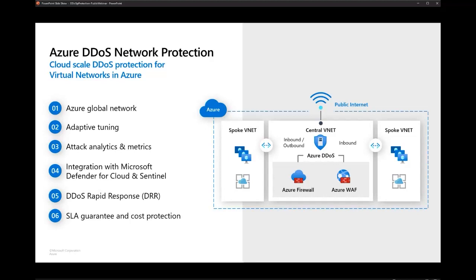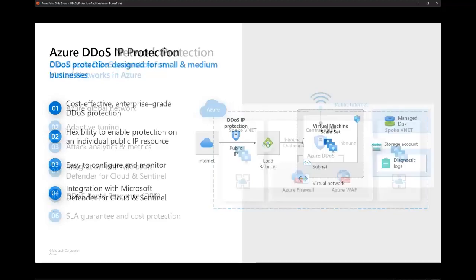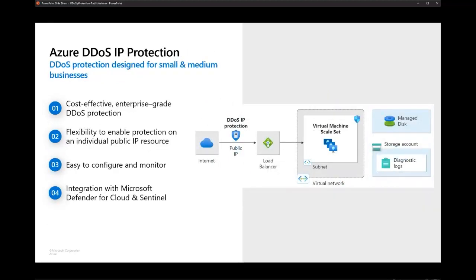When you enable the Network Protection SKU, you're paying $2,000 and it covers 100 IPs. For some customers, that's too large — some users just want to protect five, two, or even one public IP. For that reason, we now have Azure DDoS IP Protection, the new SKU. IP Protection can be enabled directly on the public IP without enabling it on the whole VNet.